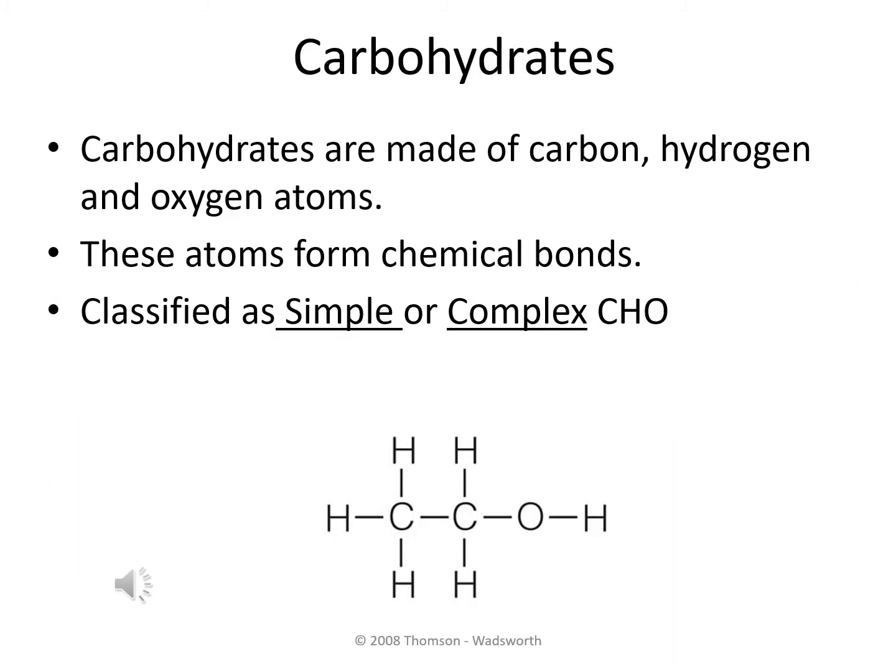The first thing we're going to take a look at is the chemical makeup of carbohydrate. Carbohydrates are made up of carbon, hydrogen, and oxygen atoms. They're linked together through chemical bonds, and they're classified as being either simple or complex. Simple carbohydrates are going to contain smaller amounts of these specific elements, whereas the complex carbohydrates are going to contain larger amounts.